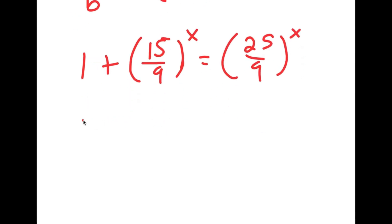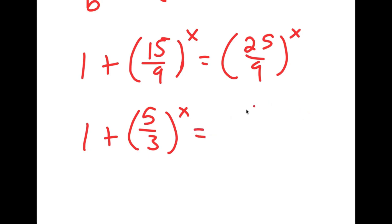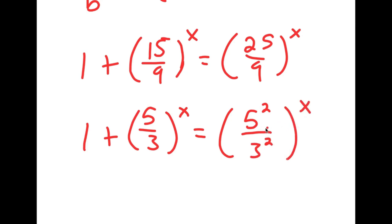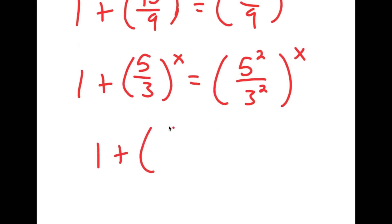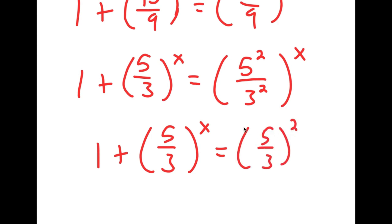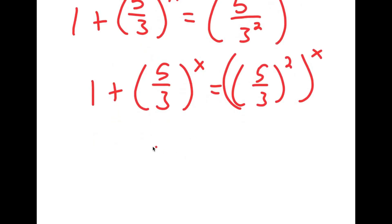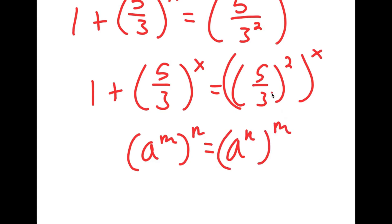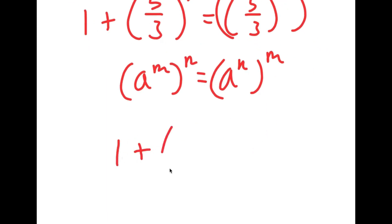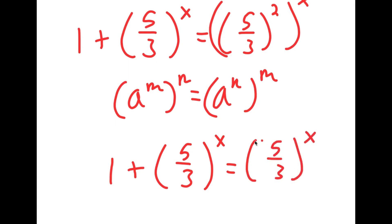Now, 15 over 9 simplifies to 5 over 3. And 25 over 9 simplifies to 5 squared over 3 squared. So now 5 squared over 3 squared to the power of x equals 5 over 3 squared to the power of x. And if I have something in the form a to the power of m to the power of n, that's the same thing as a to the power of n to the power of m. So 5 over 3 squared to the power of x is the same thing as 5 over 3 to the power of x, squared.